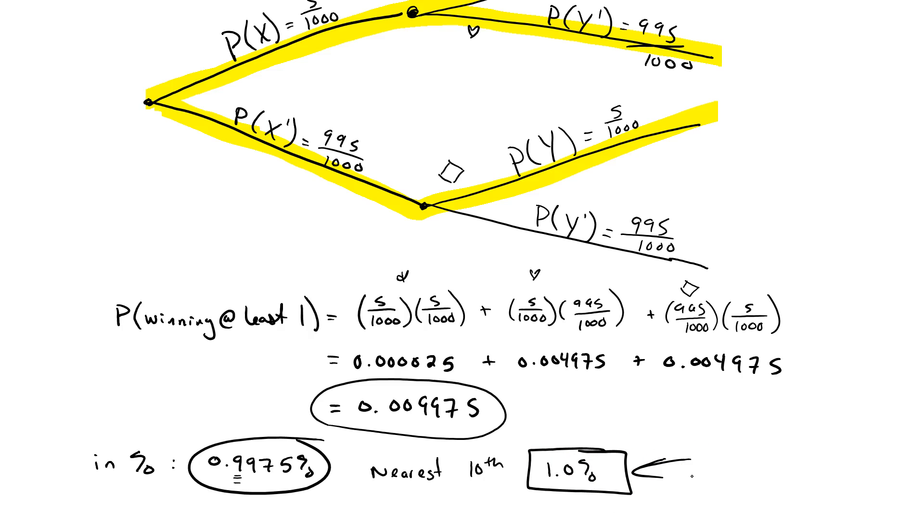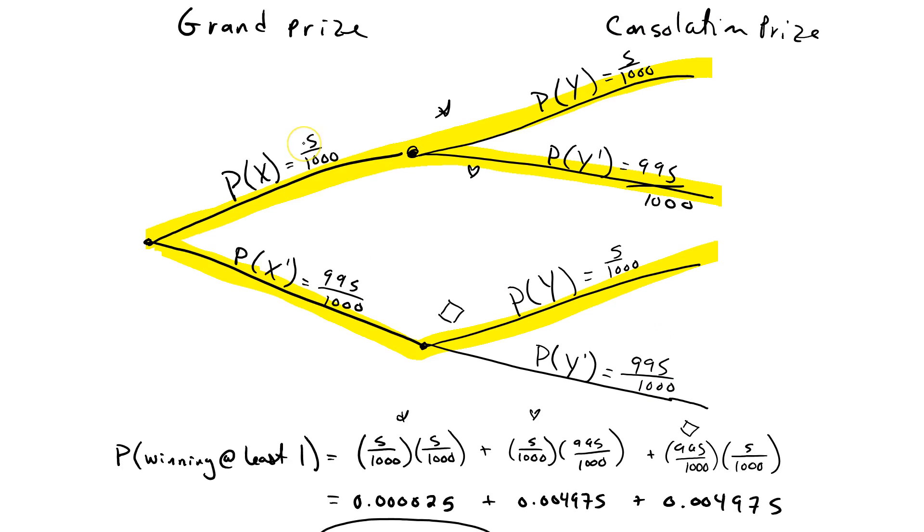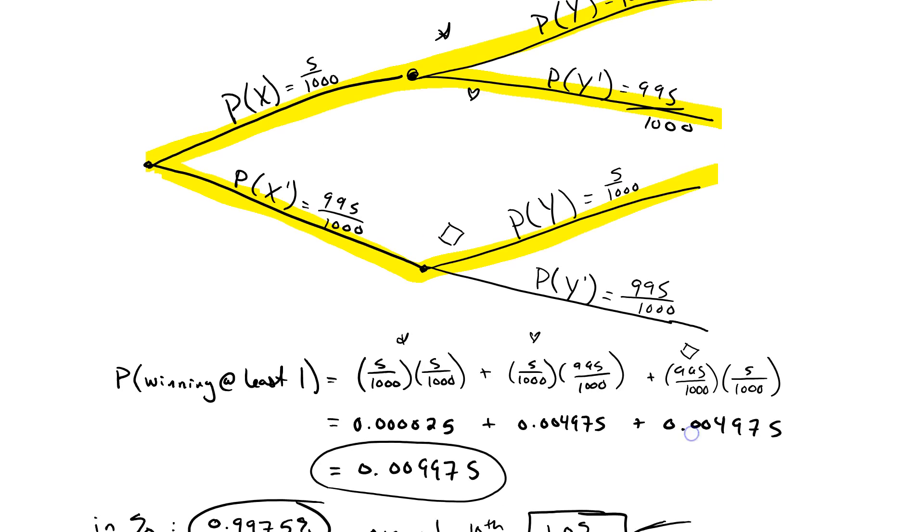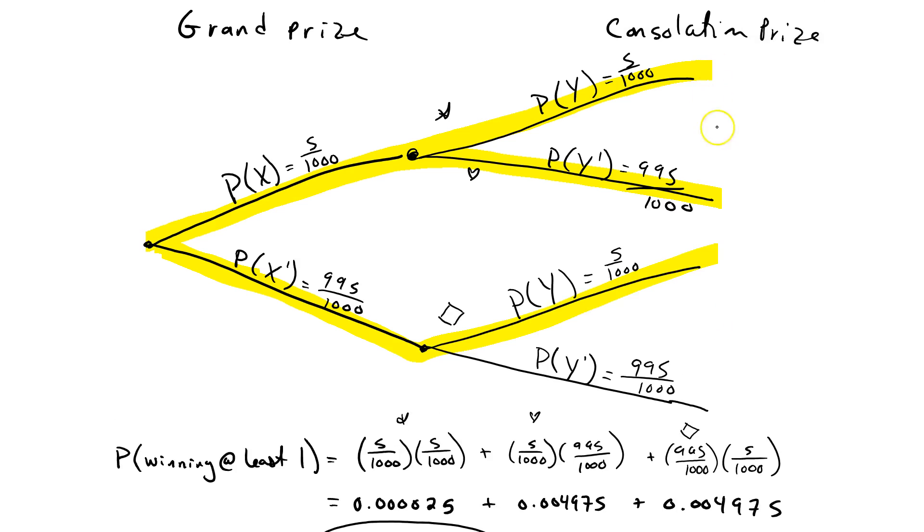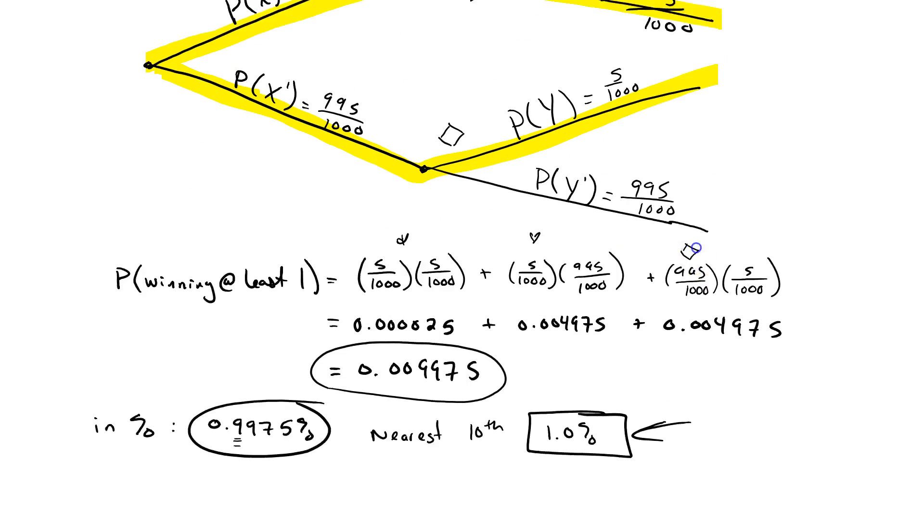Now, if you wanted to check to see if it's right, what you would do is you would keep this, but then you would also add 995 over 1,000 times 995 over 1,000. And, if you added that to this right here, just like we did in the other example, you should get 100% because there are no other outcomes. You can either win or lose the grand prize. You can either win or lose the consolation prize. There are no other outcomes. So, that means if we add up all the probabilities for each leg of these journeys, you should add up to 1.